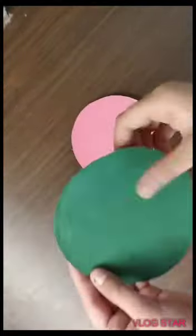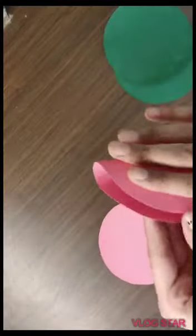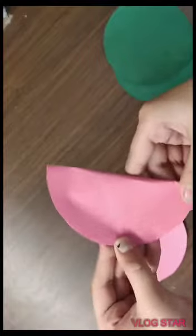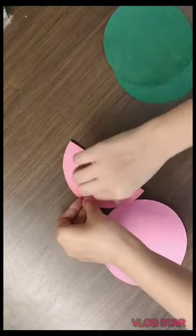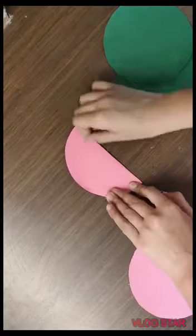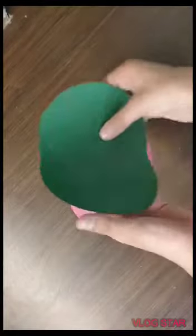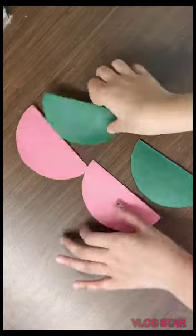So we will take 4 circles of 2 different colors. It's the size of a CD and now we are going to fold it in half and make the crease. We will repeat it with all. Like this. So now it's done.